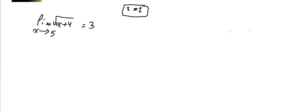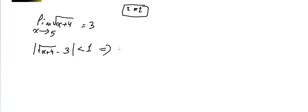We start with the absolute value of the function minus L, which is less than epsilon, so less than 1. We need to find the absolute value of X minus 5 less than Delta. This implies minus 1 less than the absolute value of radical(X + 4) minus 3, which is less than 1.